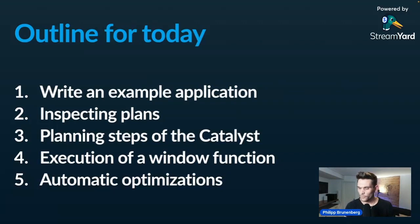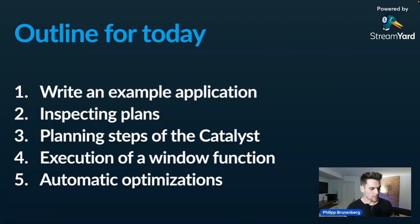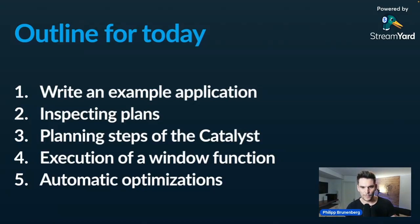Today's outline: we're going to implement a small example application — a window function — and then look at all the planning steps of the Catalyst to see how it optimizes our query plan. We'll also inspect the runtime metrics, which are the gold nuggets when looking for performance issues because they allow us to detect performance problems. If we have time, we can also look at automatic optimizations.